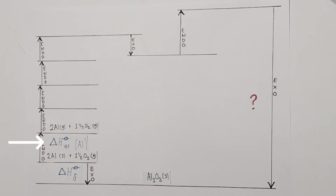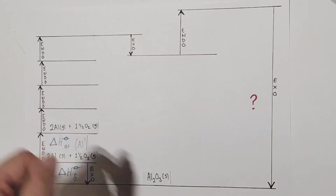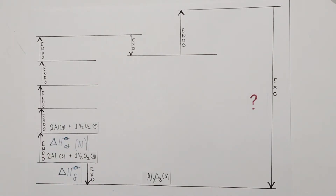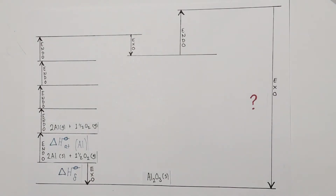This is the enthalpy change of atomization of aluminium. The definition is the enthalpy change for the formation of one mole of gaseous atoms from its element in its standard state. We're converting solid aluminium into gaseous aluminium, which takes energy because we must overcome attractions to convert it from a solid to a gaseous state where particles move much more freely. Note that nothing has been done to the oxygen yet — that's coming up next.